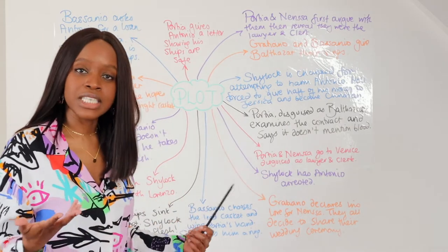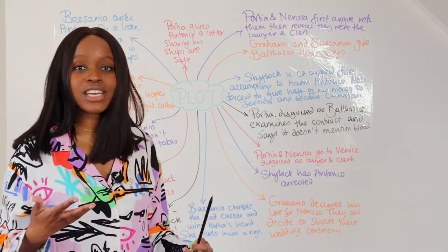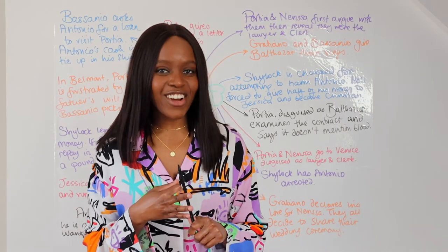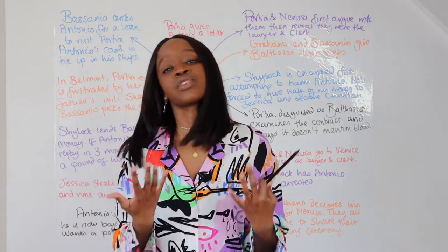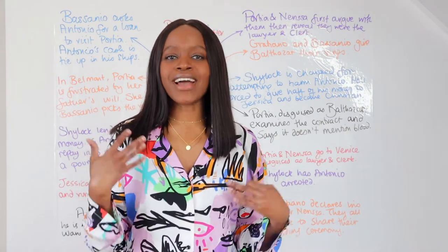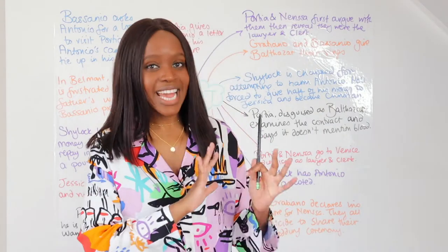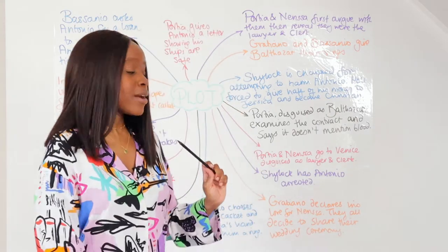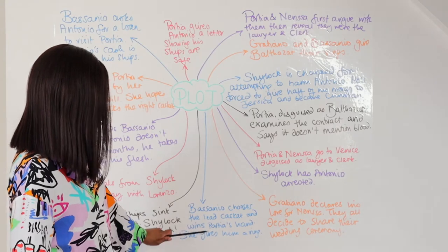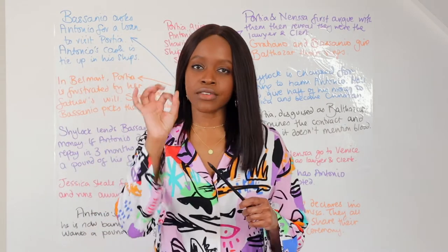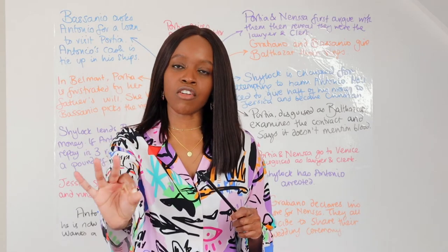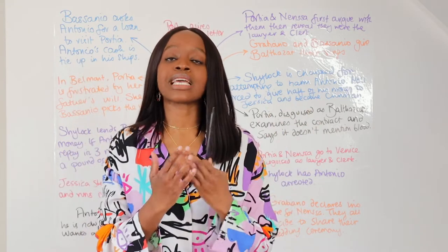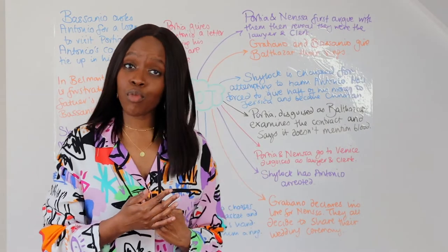We then learn that Bassanio in Belmont, when visiting Portia, ends up choosing the correct casket. He doesn't choose gold or silver — he chooses the lead casket, which contains Portia's image. Portia is really delighted that the man she wanted to marry won her hand in marriage. She gives him a ring as a token of her love and tells him that in no circumstance can he give it away. Bassanio gives his undying promise that he will never give away the ring.